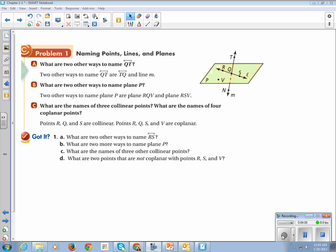Naming points, lines, and planes. What are two other ways to name the line QT? We can go TQ, just reverse it. We can pick another point, which is N, and go QN. But it's got to have the arrows going both ways. And it's got to have the letters. So let's look at our got it.